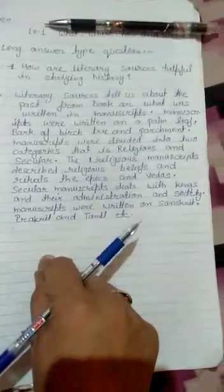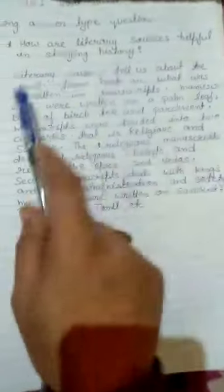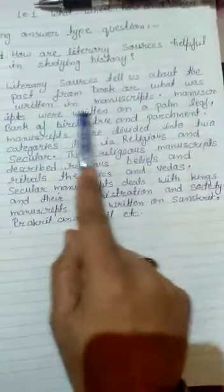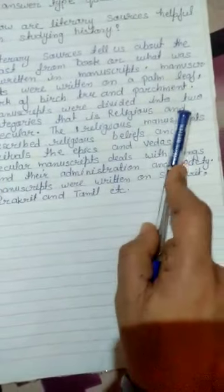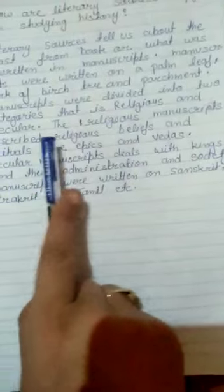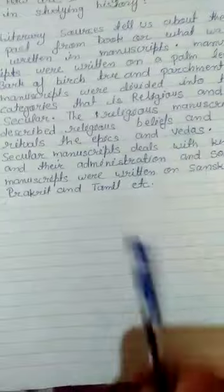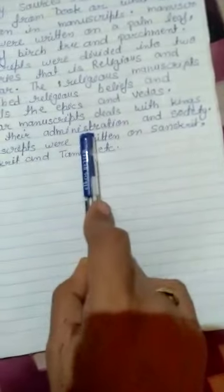Now I will explain in short. Literary sources tell us about the past from books or what was written in manuscripts. Manuscripts were written on palm leaf, bark of birch tree, and parchment. Manuscripts were divided into two categories: religious and secular. Religious manuscripts describe religious beliefs and rituals, the Epics and Vedas. Secular manuscripts deal with kings and their administration and society. Manuscripts were written in Sanskrit, Prakrit, and Tamil.